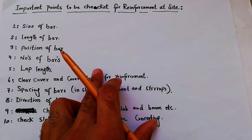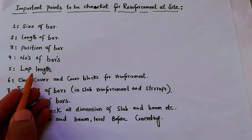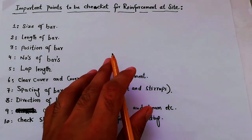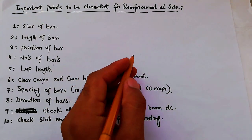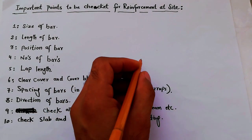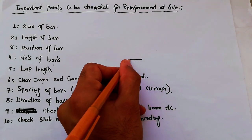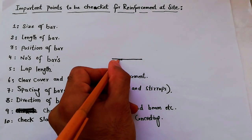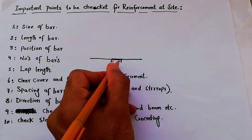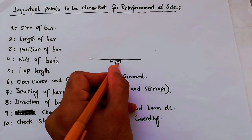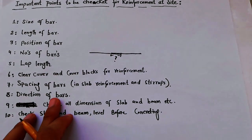The fifth one is lap length — check if the lap length is okay or not. I have already discussed what the lap length is. When you place the steel on the slab, you have to check the lapping length for main bars and also distribution bars. For both you have to check the lapping length.